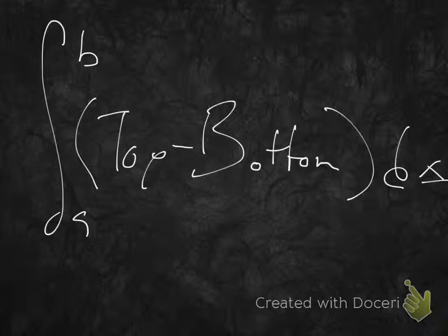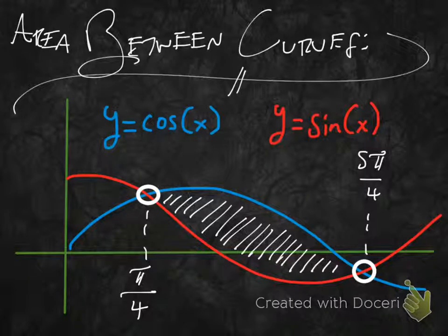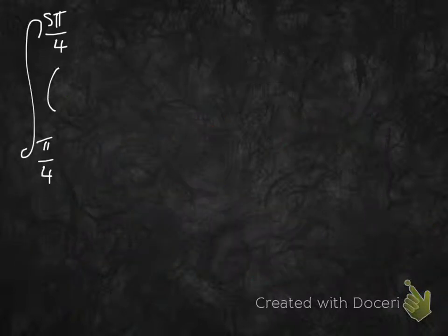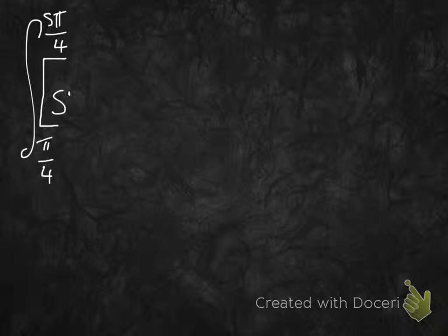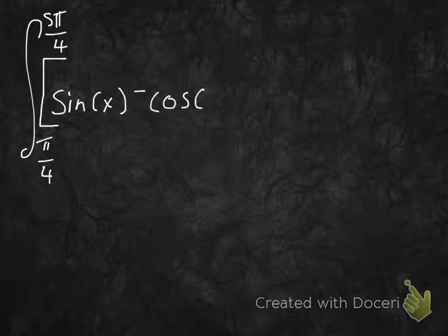So we're asking for the definite integral of the top minus the bottom. Which function is actually higher? Looking at the graph, sine is the top function coming in. So we'll have the integral from π/4 to 5π/4 of sine x minus cosine x dx.